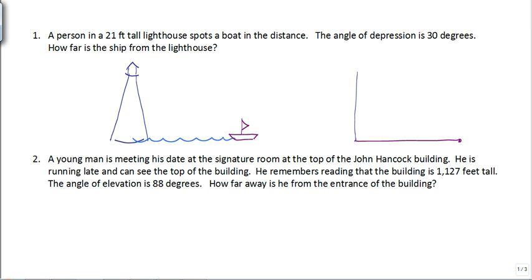So you got this person standing in this lighthouse and he spots a boat in the distance. The angle of depression is 30 degrees. How far is this ship from the lighthouse? So there's your right triangle. If you want to draw it that way. And of course, here's your right angle because we're assuming that height is always vertical. So we got this guy looking in here. Here's his line of sight.